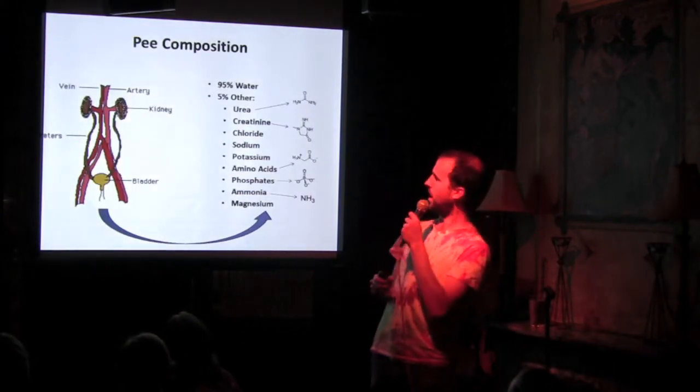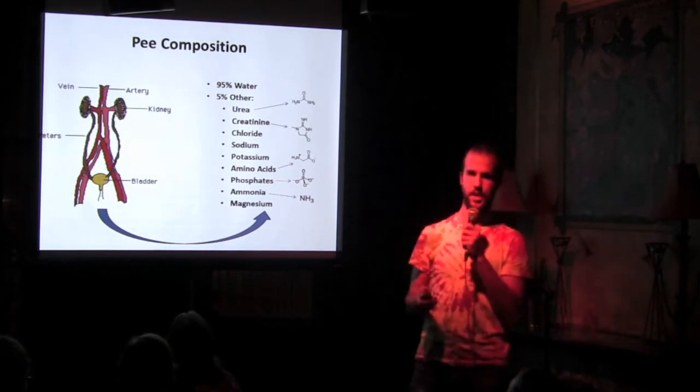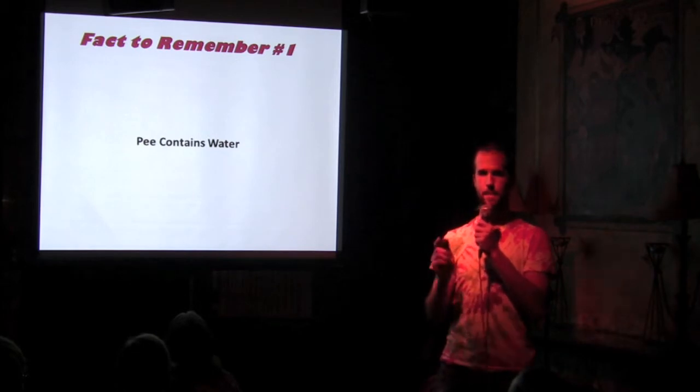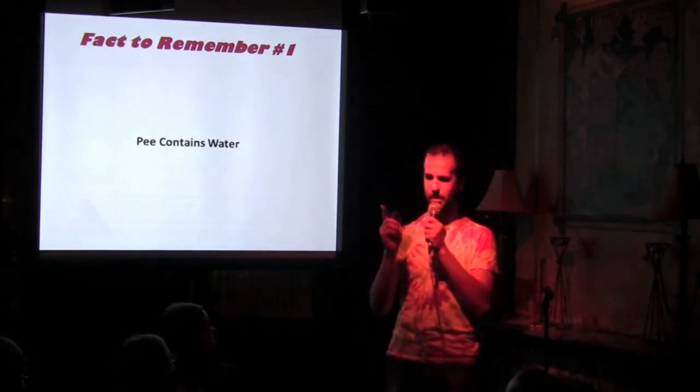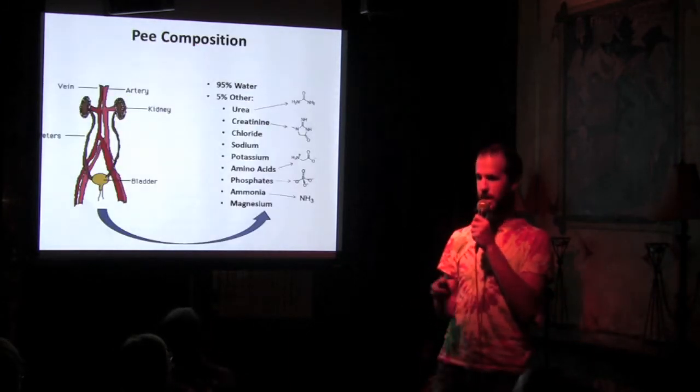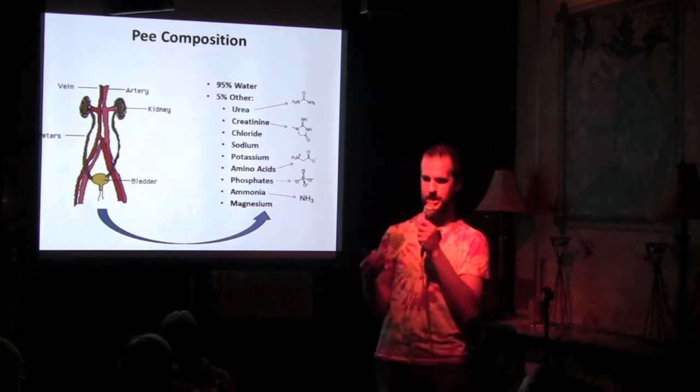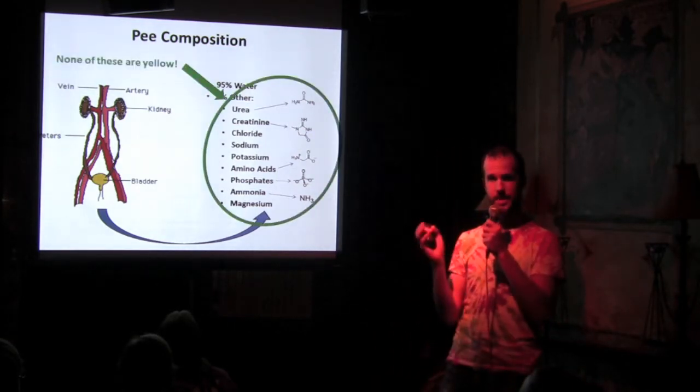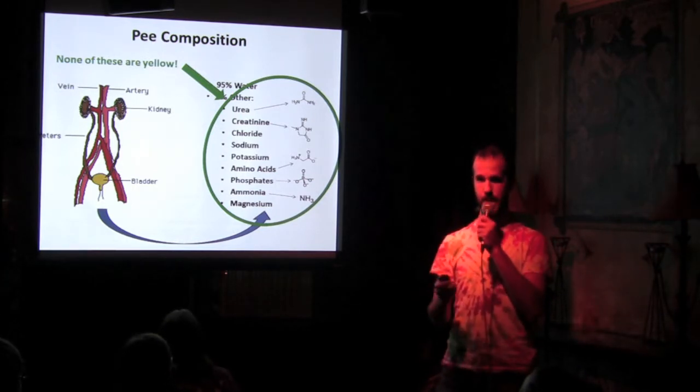So here's the composition of pee. We can see that pee is 95% water. And so that is fact to remember number one for the end of the talk. Pee contains water. Do not forget this. Is there a test? There's no test, but it will be very helpful if you remember it. So then the other pretty much 5% right here. And as a chemist, I'm looking for something that is yellow. And I can tell you that none of these things are yellow. So this is like, you know, WTF, what is it in pee that makes pee yellow?